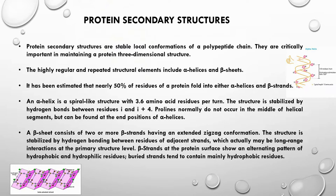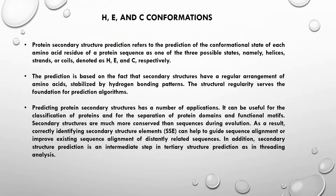An alpha helix is a spiral-like structure with 3.6 amino acid residues per turn, stabilized by hydrogen bonds between the ith and the i+4th residue. Prolines normally do not occur in the middle of a helical segment but can be found at end positions. A beta sheet consists of two or more beta strands with extended zigzag conformation, stabilized by hydrogen bonding between residues of adjacent strands, which may involve long-range interactions. Beta strands at the protein surface show an alternating pattern of hydrophobic and hydrophilic residues, while buried strands tend to be mainly hydrophobic.